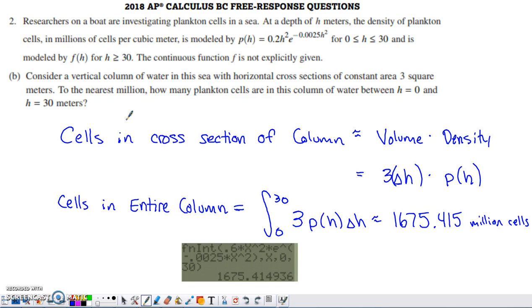So here's what I thought. I'm going to approximate the amount of plankton cells in a cross-section of the column. So I'm going to have to have the volume of that cross-section, and I'm going to have to multiply that by the density in order to figure out how many plankton cells are present within that cross-section of the column of water.